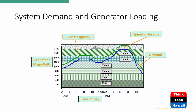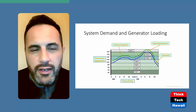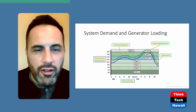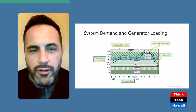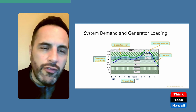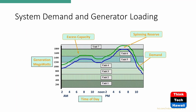This chart shows system demand and generator loading over a typical day — from midnight to midnight in two-hour increments. The load curve is shown in blue, generation capacity in green, and horizontal bars represent units one through seven, which run at different times depending on what's needed. Unit one runs pretty much all the time, as does unit two until midnight, when it backs down or shuts off. Units three and four back off or shut down as needed. Units five, six, and seven are run as needed.